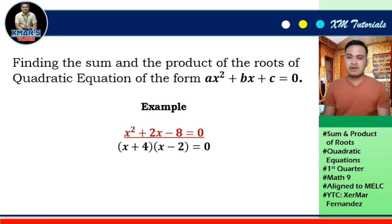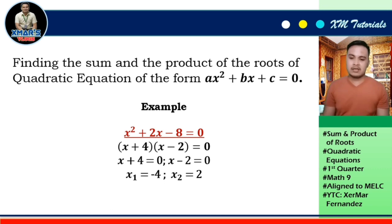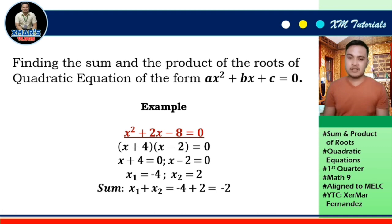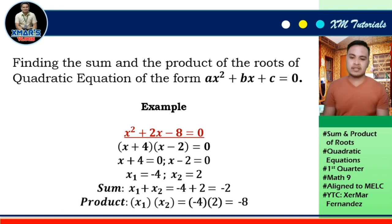After getting the factors, we set each factor equal to 0: x + 4 = 0 and x - 2 = 0. The values of x are x₁ = -4 and x₂ = 2. To get the sum: x₁ + x₂ = -4 + 2 = -2. To get the product: x₁ × x₂ = -4 × 2 = -8. Therefore, the sum of the roots of x² + 2x - 8 = 0 is -2, while the product is -8.